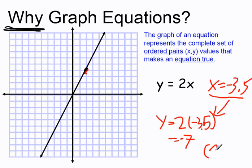So we're going to expect that the point (-3.5, -7) is going to be on the line. If I go on my graph back 3.5 and down 7, sure enough, my line runs right through it.